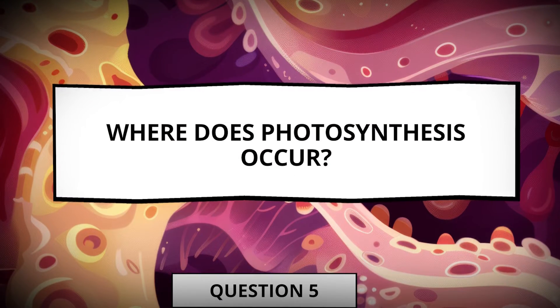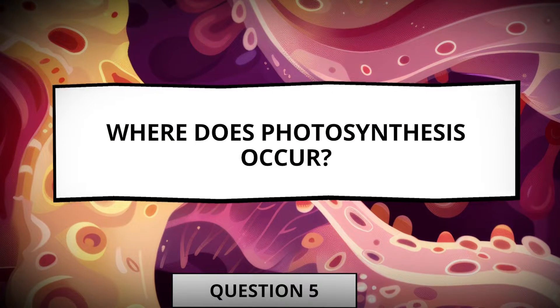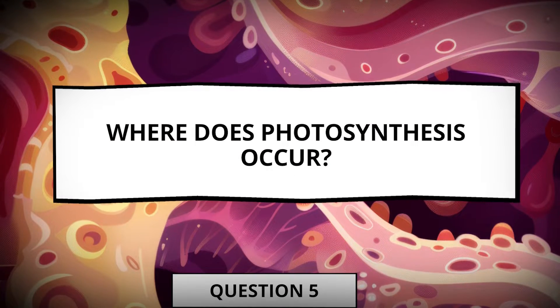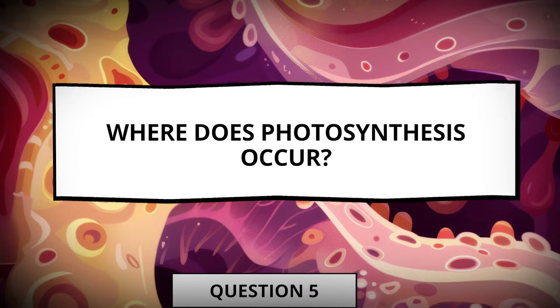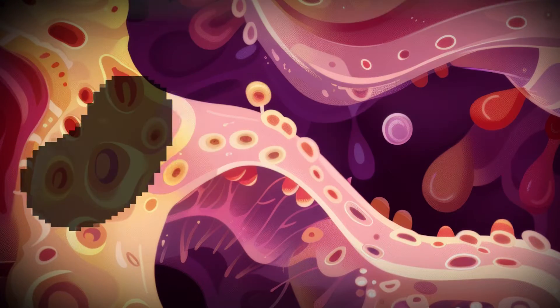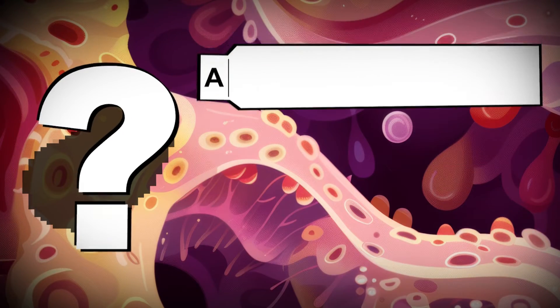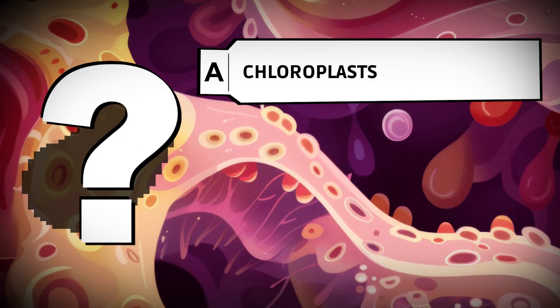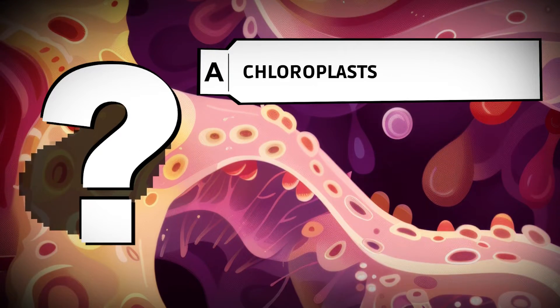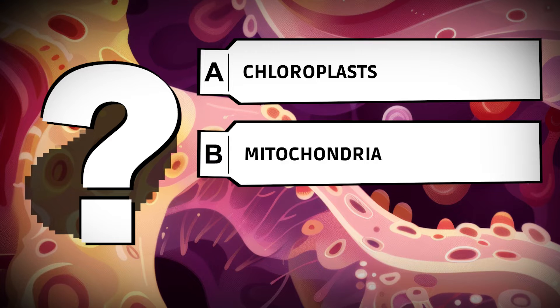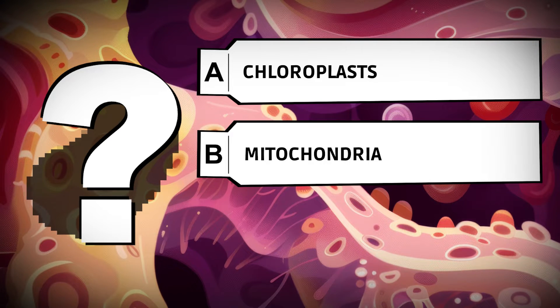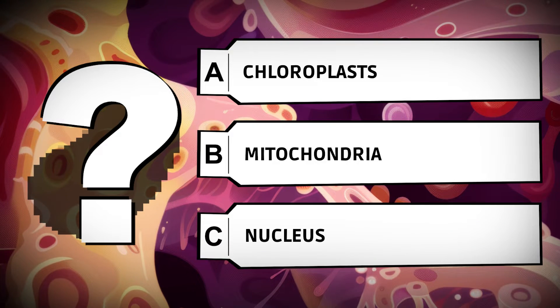Where does photosynthesis occur? Chloroplasts. Mitochondria. Nucleus.